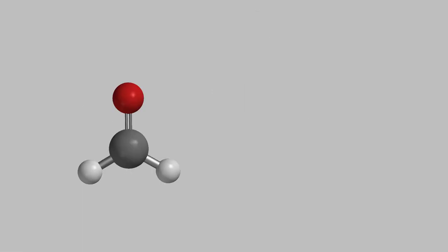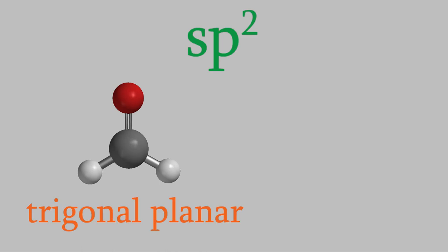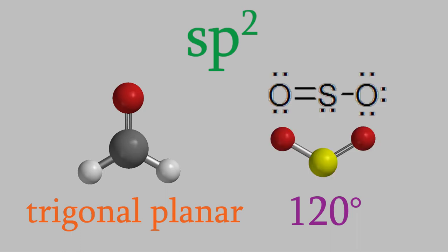If the central atom has one double bond, as in this formaldehyde molecule, then we get a different hybrid orbital, called an sp2 hybrid. This has a trigonal planar shape, so sp2 hybrid orbitals have a 120 degree angle between them. Just as with sp3 hybrids, sp2 hybrids can have an unshared electron pair on the central atom, as long as there's only one double bond on the atom. So, for example, the sulfur in sulfur dioxide has an sp2 hybrid orbital, which is why it has a bond angle of 120 degrees.